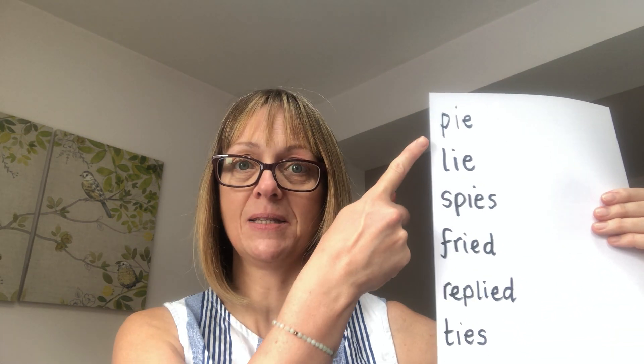Let's have a look at this grapheme. We worked on this about four weeks ago. The grapheme is I, spelt I-E, and the phoneme is I. Let's read some words — you know all these ever so well, so say them with me please. Pie. Lie. Spies. Fries. Replied. Ties.